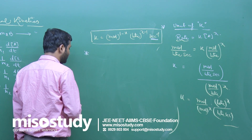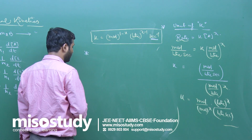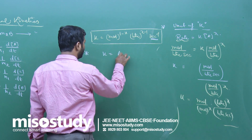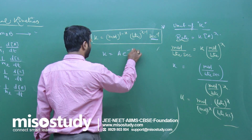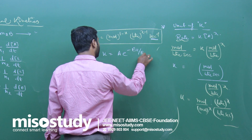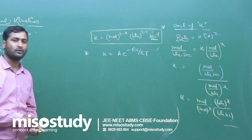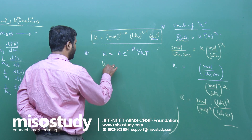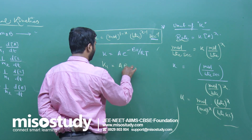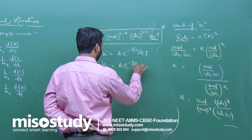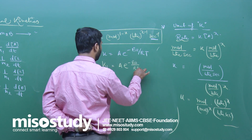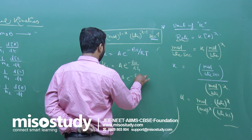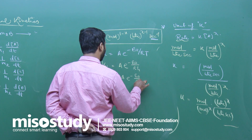Now we have the dependence of rate constant on temperature. We know the Arrhenius equation: k = A·e^(−Ea/RT), where Ea is the activation energy. So k₁ = A·e^(−Ea/RT₁) and k₂ = A·e^(−Ea/RT₂).